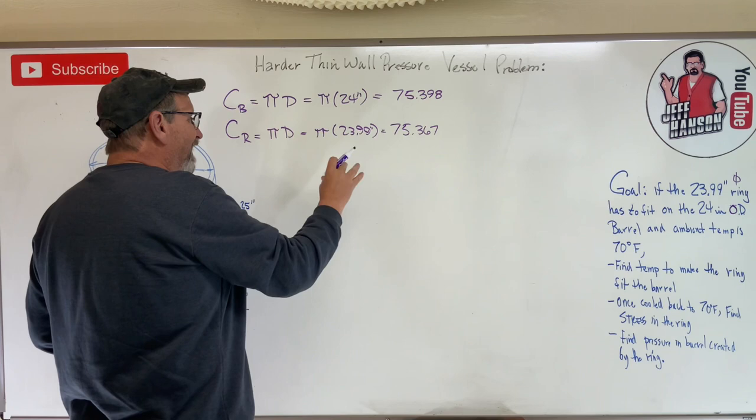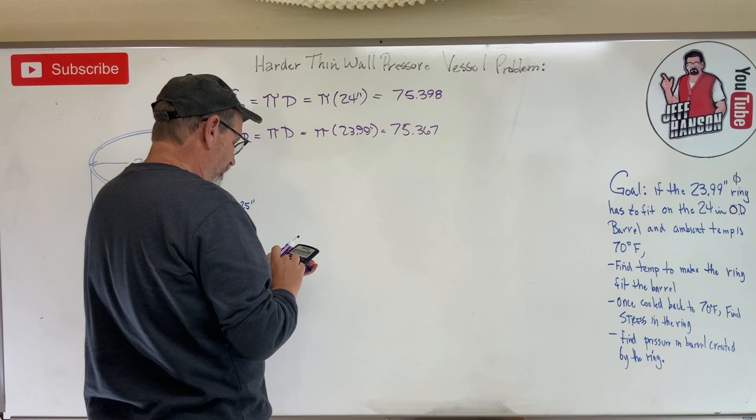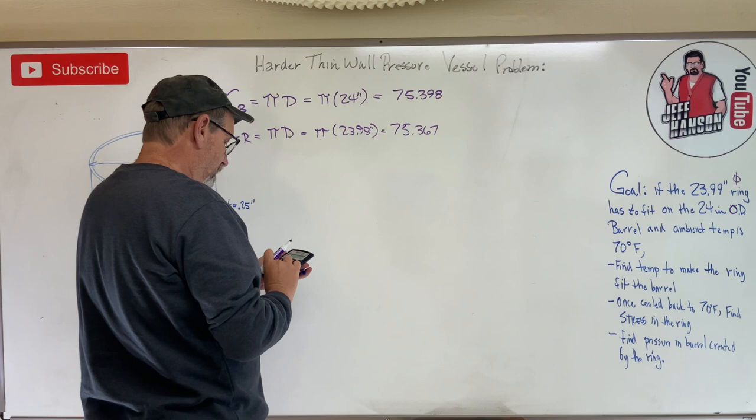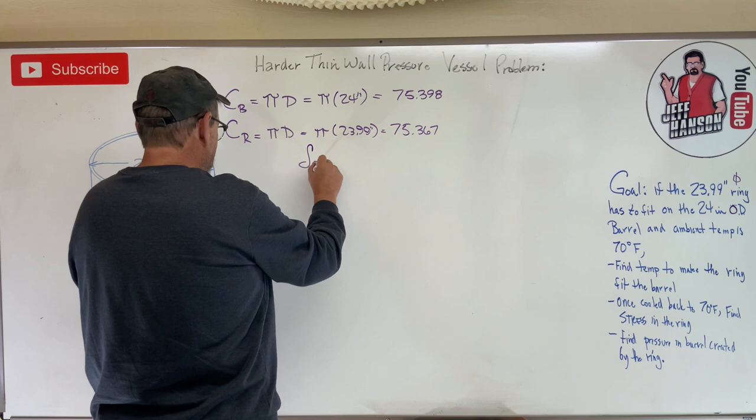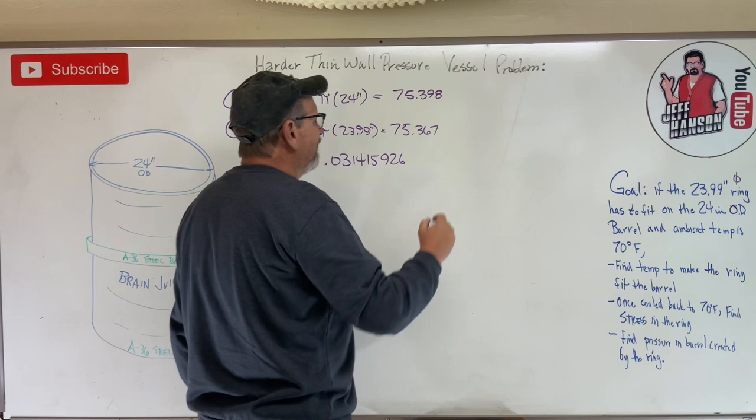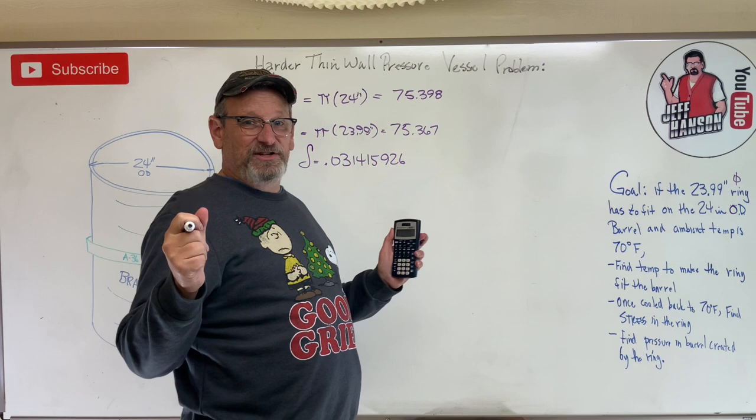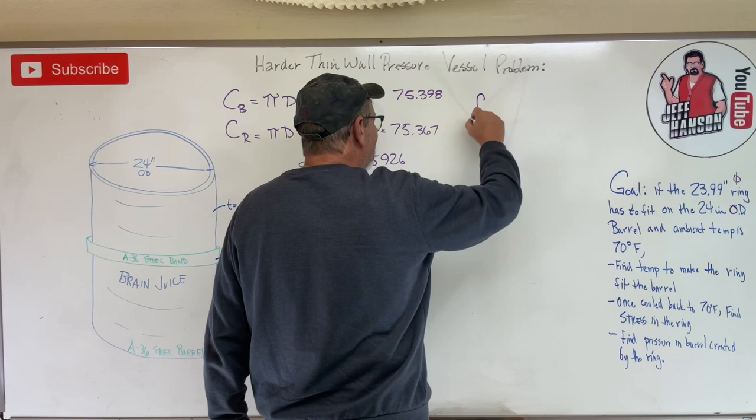This calculator rounds because we know π goes on forever. So what I want is how much bigger does this need to fit over that. If we take that and subtract it from that, we get 75.398 minus answer equals - you're not going to believe this - delta needs to equal 0.031415926. It's π! How are we going to make this that much bigger? We're going to crank up the temperature. Thankfully thermal expansion is going to make that ring bigger.